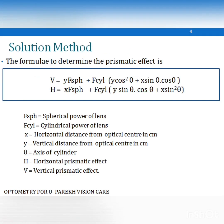In order to find the prismatic effect on the surface of the lens, it is necessary to calculate the vertical and the horizontal prismatic effect. In case of a vertical deviation, it is calculated by the sum of a spherical and cylindrical component. The spherical power of the lens is multiplied with the vertical distance from the optical center, and the cylindrical power is multiplied with y·cos²θ + x·sinθ·cosθ, where θ is the axis of the cylinder, x is the horizontal distance from the optical center.